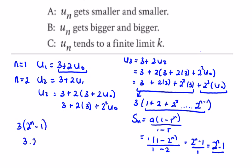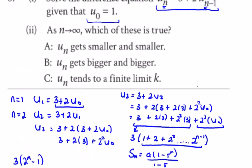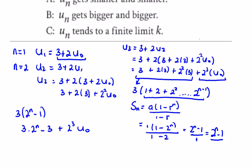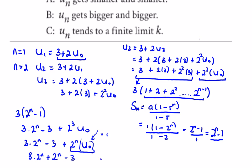So we end up with 3·2ⁿ − 3 plus 2ⁿ times u₀. Since u₀ is equal to 1, this gives us 3·2ⁿ minus 3 plus 2ⁿ. Combining the 2ⁿ terms we have four 2ⁿ's, so uₙ equals 4·2ⁿ minus 3.